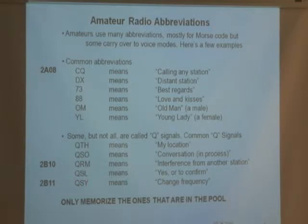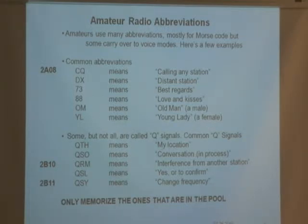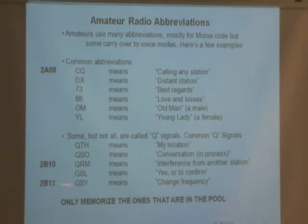QSL — back in the days when I got my license in the '50s, every time you made a contact with a ham, you sent them a card. It verified that you had had a QSO that day, and that was your proof that you talked to that person. You could get various awards — they're called QSL cards. And QSY means 'let's change frequency.' Instead of saying all that, especially in Morse code, you say let's QSY. So the ones to remember: QRM, QSY, and CQ — there are tons more.